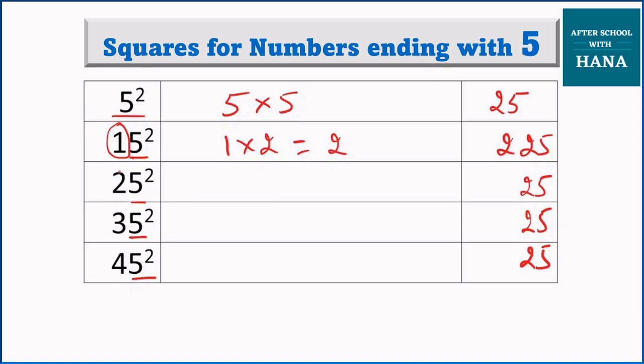25 squared. What is the number here? 2. 2 multiply by 3 is equal to 6. So 25 squared becomes 625.